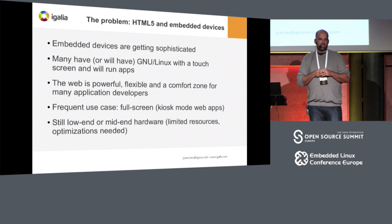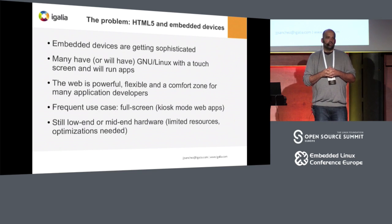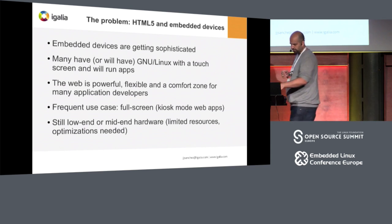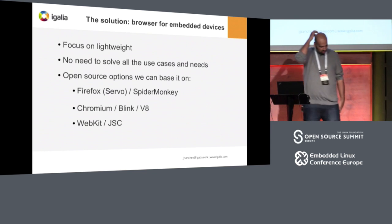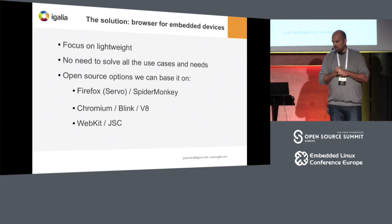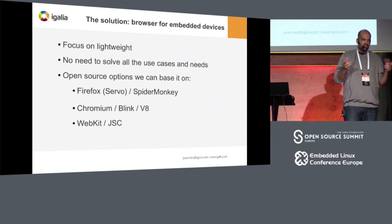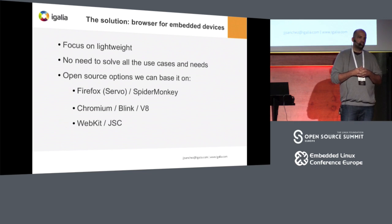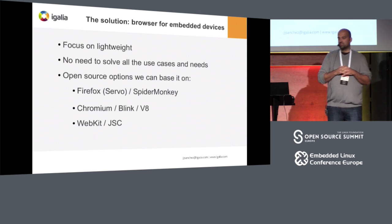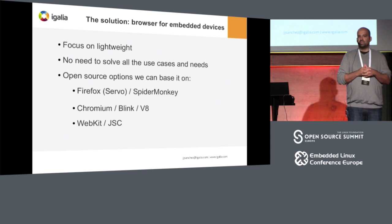Of course, it's still low-end hardware in many cases — it doesn't have a lot of memory, doesn't have a very powerful CPU, though it typically has a GPU that can be used. There are a lot of optimizations needed compared to more powerful hardware. The solutions need to be focused on being lightweight. We don't need to solve all the possible use cases of a web browser — we want to solve a very specific and limited case. So we need to look into the different open source alternatives and see how good or bad they are.